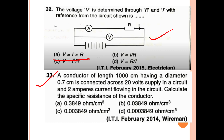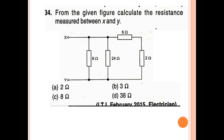33rd question: A conductor of length 1000 cm having a diameter of 0.7 cm is connected across a 20 volt supply, and a 2A current flows in the circuit. Calculate the specific resistance. The answer is 3 ohm.